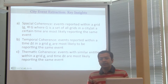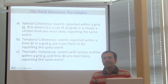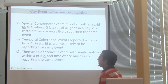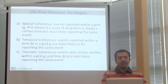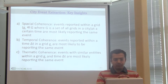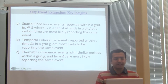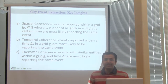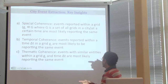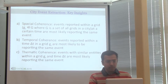Now that we have annotated tweets, I'll give some insights on how to extract events from the annotated data. There are three major insights. First, spatial coherence: if you have a city divided into grids, whatever happens in a grid is probably related to one event if reported at the same time. Second, temporal coherence: events reported within a short time span are most likely talking about the same event. Third, thematic coherence: entities of similar kind will be mentioned for a particular event.